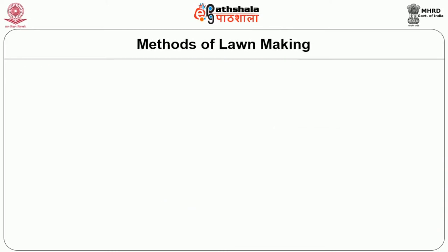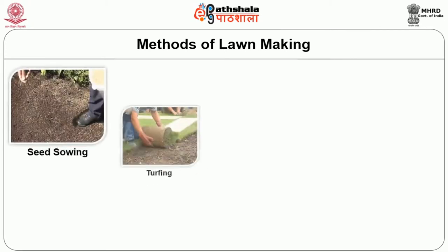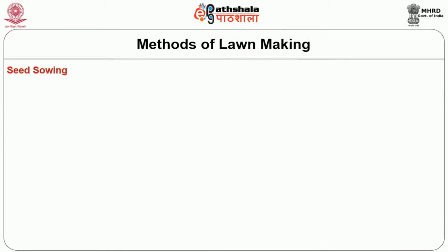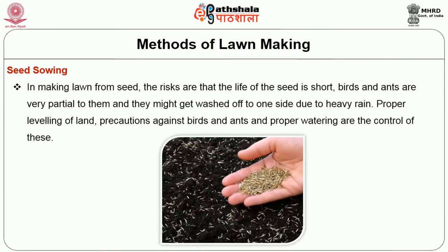Then we will discuss the methods of lawn making. Common methods used in Indian conditions are seed sowing, turfing, dibbling, and chopping. First, seed sowing: in making lawn from seed, the risks are that the life of the seed is short, birds and ants are very partial to them, and they might get washed off to one side due to heavy rain. Proper leveling of land, precautions against birds and ants, and proper watering are the controls for this.